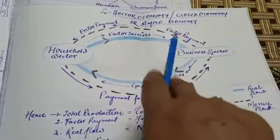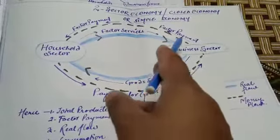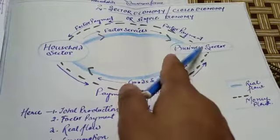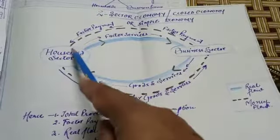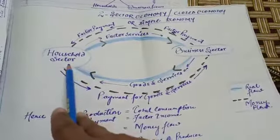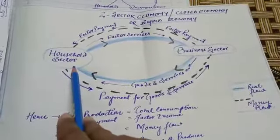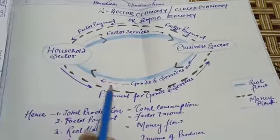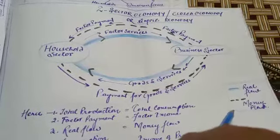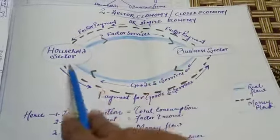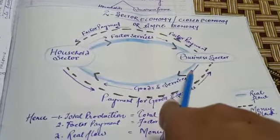This outer loop with black dashed lines shows how, for their factor services, business sector provides factor payment to the household — meaning money is exchanged — and household spends money on the purchase of goods and services, providing money back to the business sector. This dashed line, which we call money flow, shows the transfer of money between the two sectors.